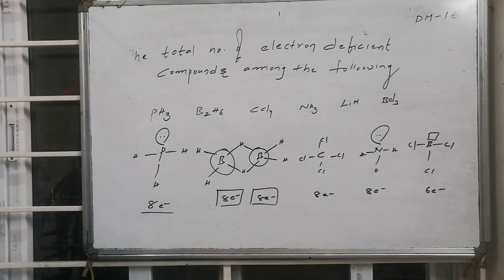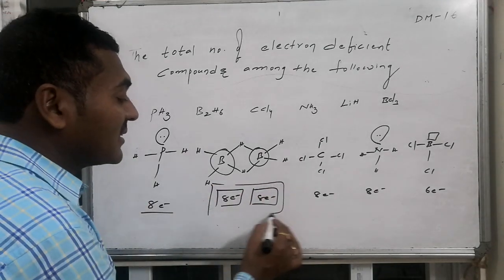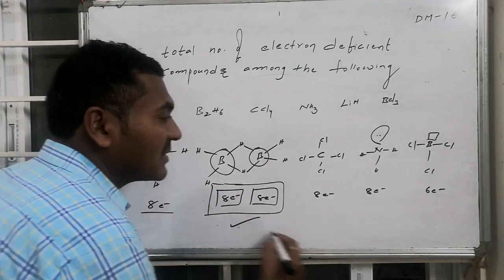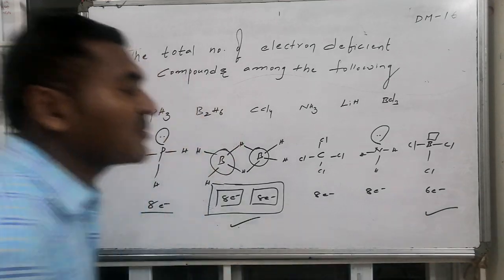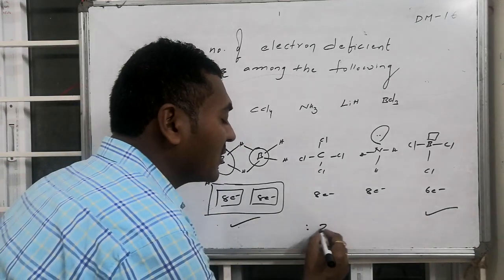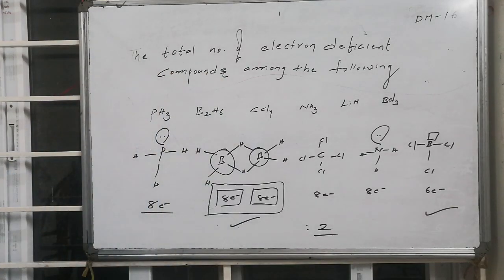What we have to understand is it is not having octet configuration. Hence it is also electron deficient, and boron trichloride is also found to be electron deficient. Thus there are two electron deficient compounds.